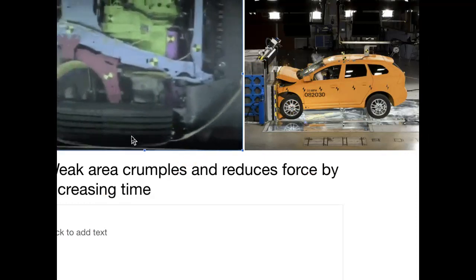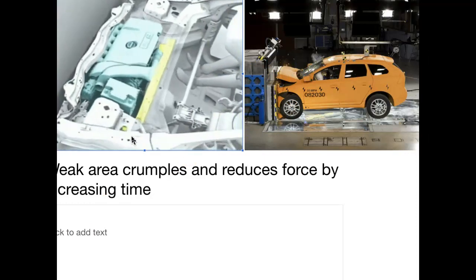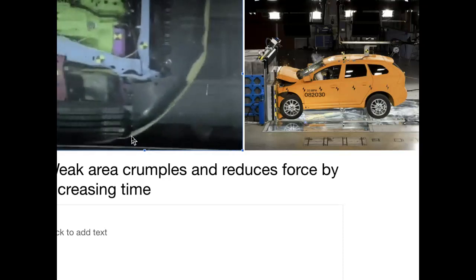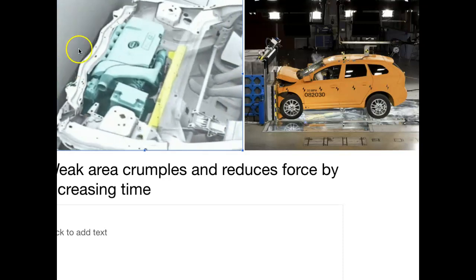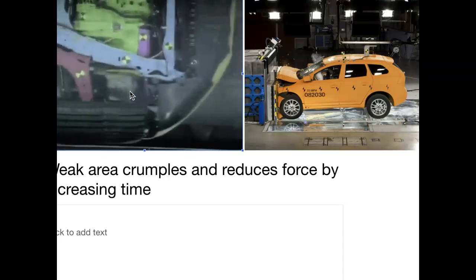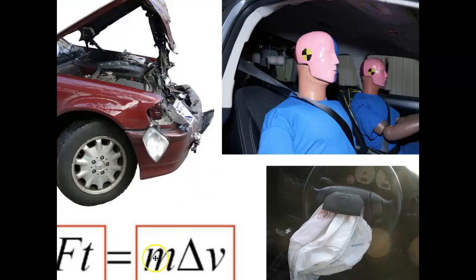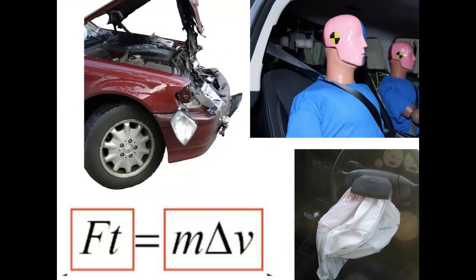they design car crumple zones so that when cars crash they take ages to stop. You can see here this is a crumple zone and look at the way it stops. It doesn't suddenly stop, forcing the passengers to continue at a high velocity through the windscreen. What they do is they slowly crumple, extending that time, making this time much greater, and so the change in momentum is the same, so the force must be much smaller.